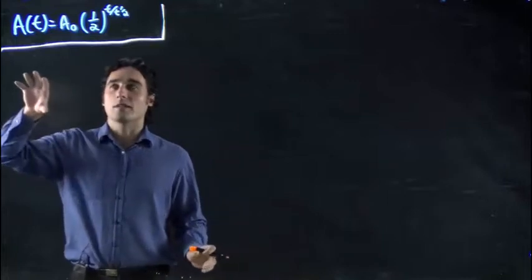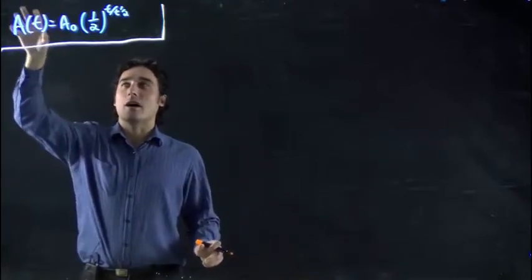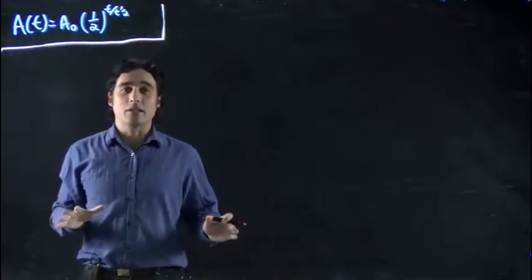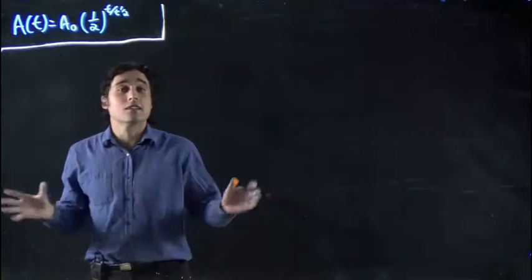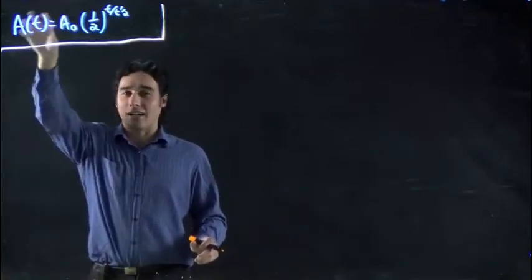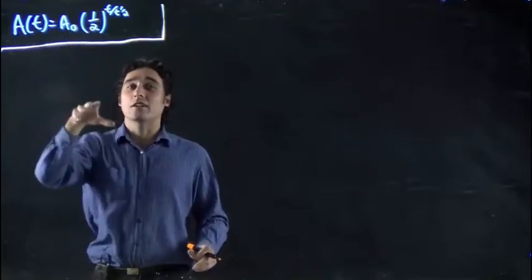Again, we're using a general formula. So this left-hand side, this A(t) is just some amount of material we have at time t, whatever that time might be. It might be five seconds, might be three years, depends on the product we're looking at. It's how much we have at that time. Certain amount of time has gone by.